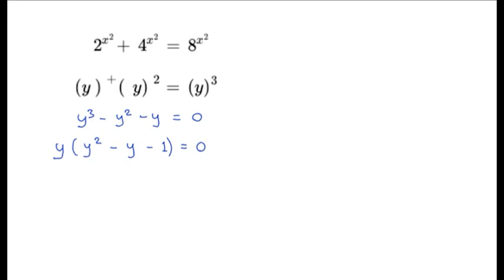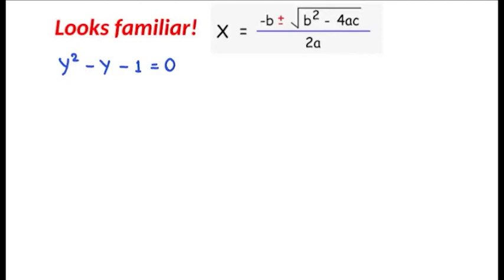Now we check whether y equals 0 is a valid solution. Since y equals 2 to the power of x, and 2 to the power of x cannot equal 0 for real numbers, that option is rejected. The remaining quadratic y squared minus y minus 1 looks familiar — we can use the quadratic formula.